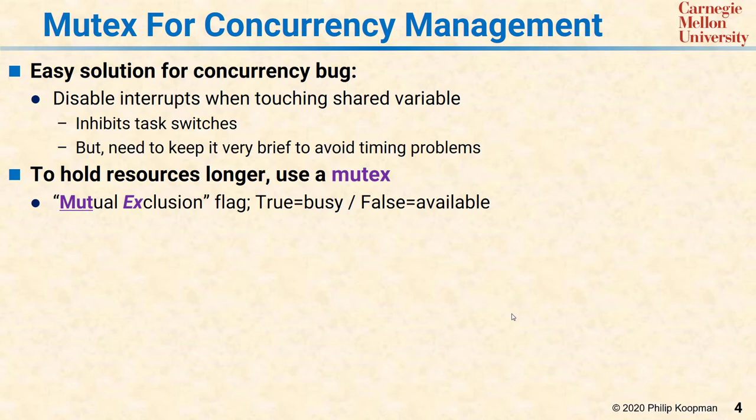A mutex is a flag that when true means the resource is busy, and when false means the resource is available. Each global variable or other shared resource — it might be an ADC converter or a hardware resource — has with it a flag. That flag tells you whether or not it's safe to access the global, depending on whether some other task is using it.